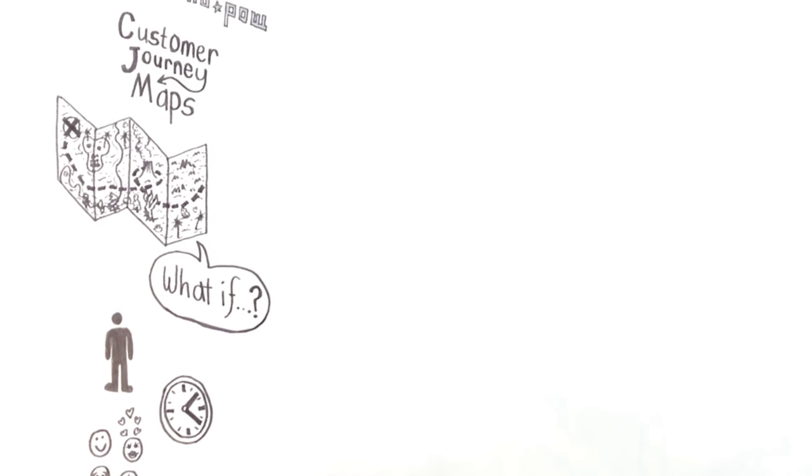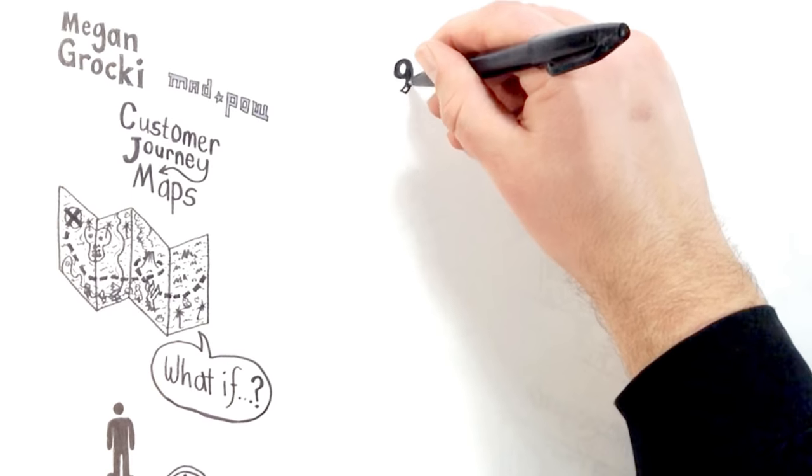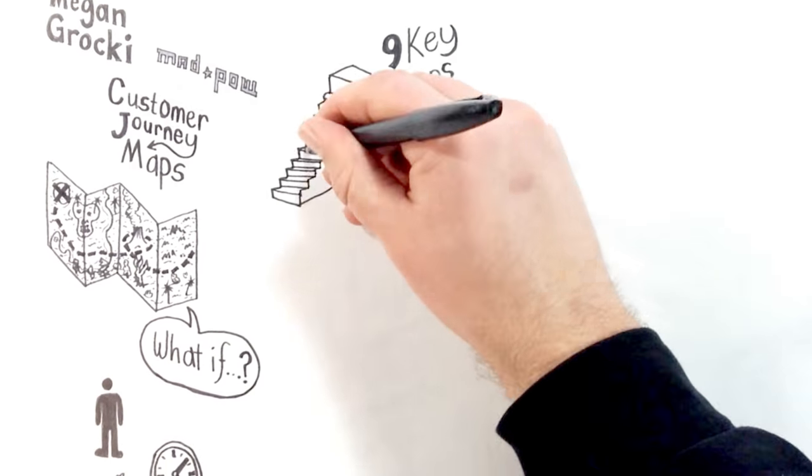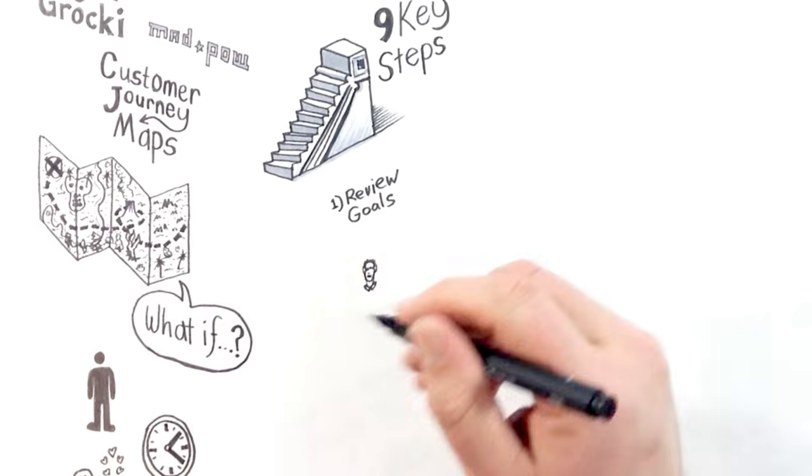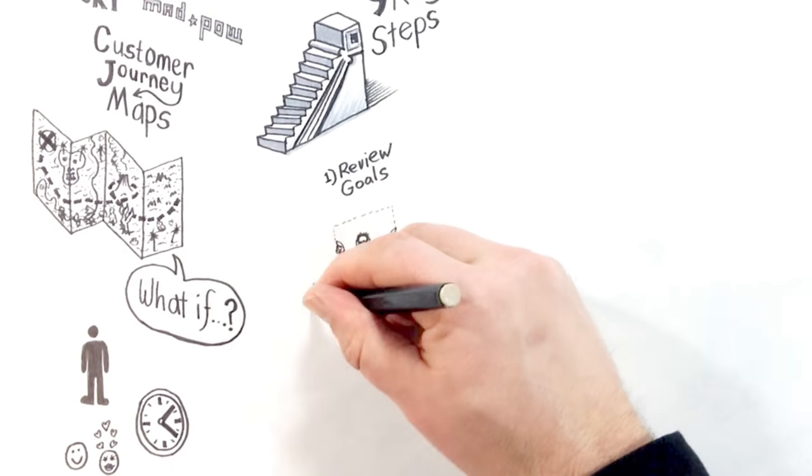So how does one create a customer journey map? There are nine key steps. Number one, review the goals for the product or service.